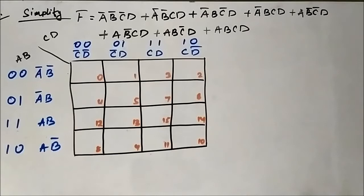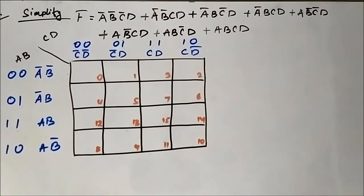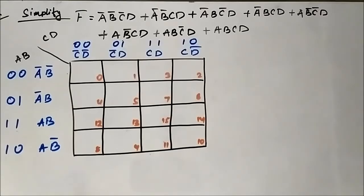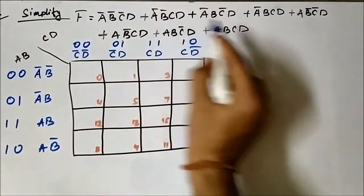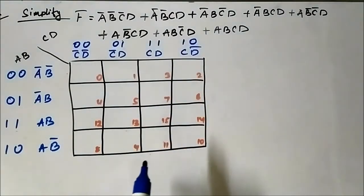We will be discussing a lot of questions related to 4-variable K-maps. Mainly the questions that come in exams revolve around 3 and 4 variable K-maps. 2-variable K-maps are very simple, and 5-variable and above become very lengthy. So here we have a boolean expression which is given, and we have to simplify it.